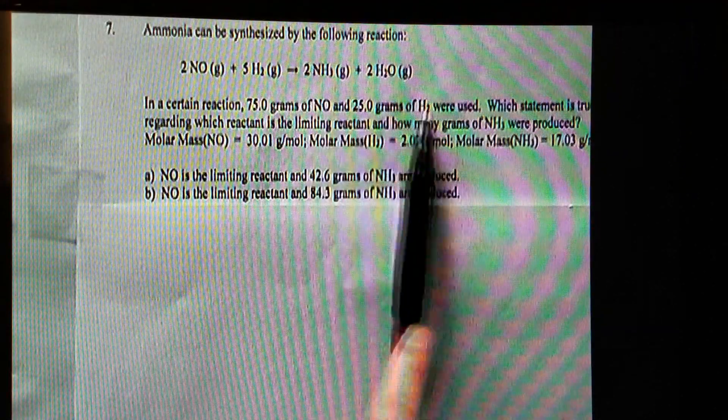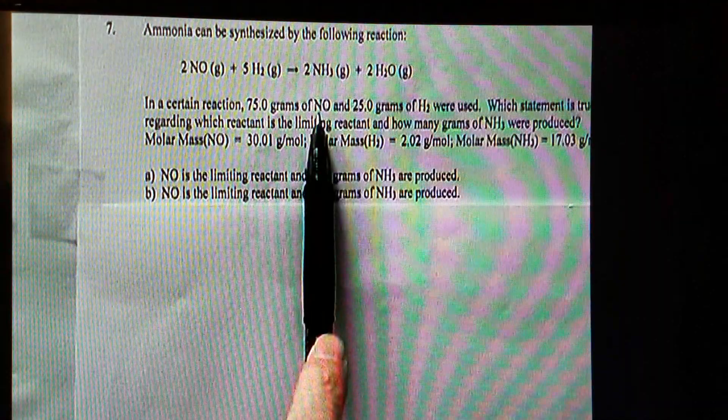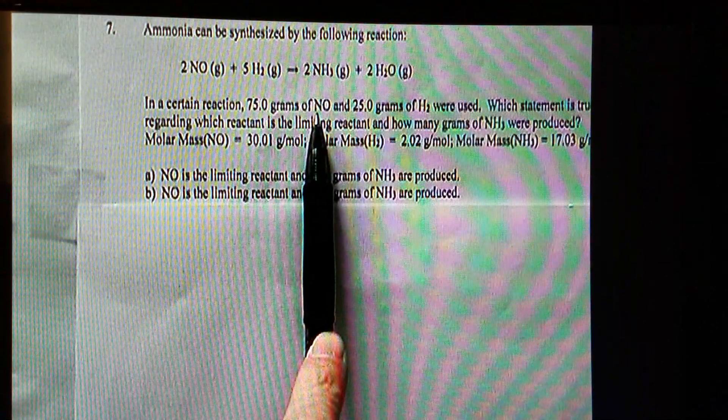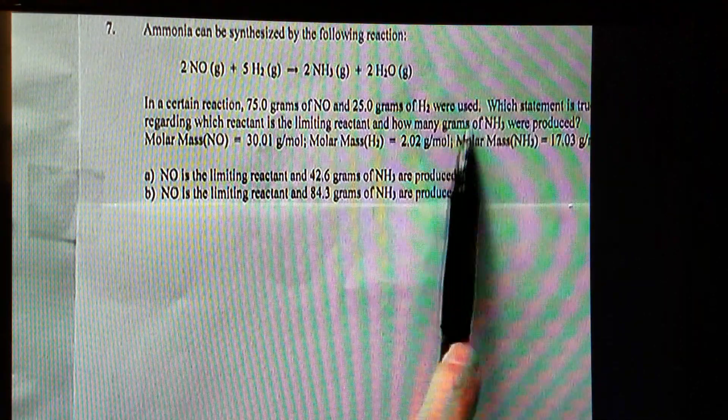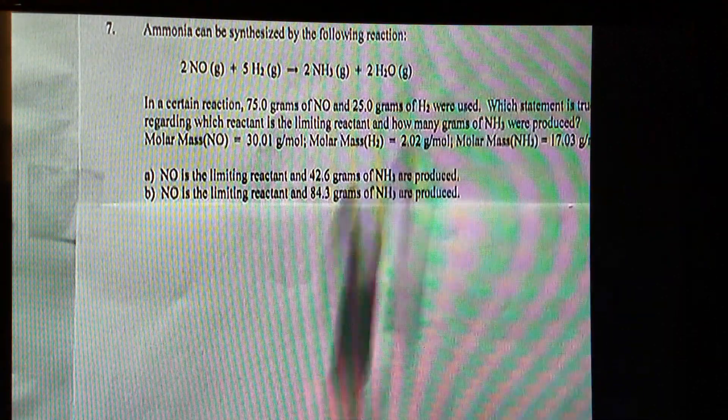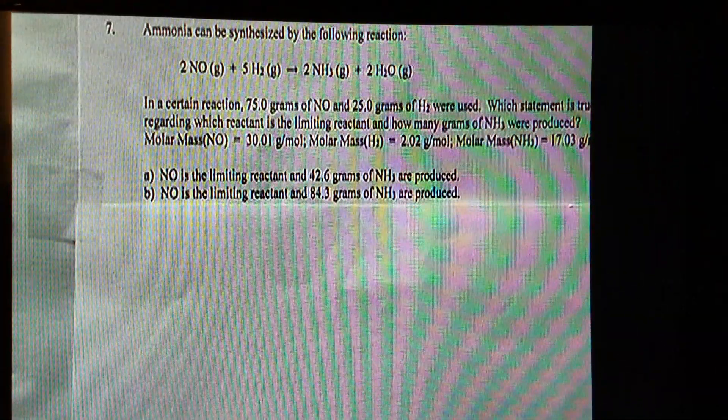Once we find out which one is the limiting reactant, we use that value to calculate the theoretical yield. In other words, it's the theoretical yield. Again, we start with what we know.